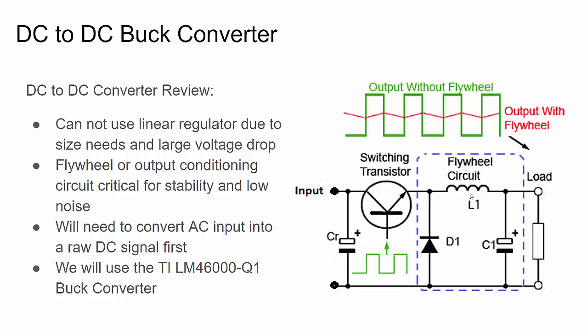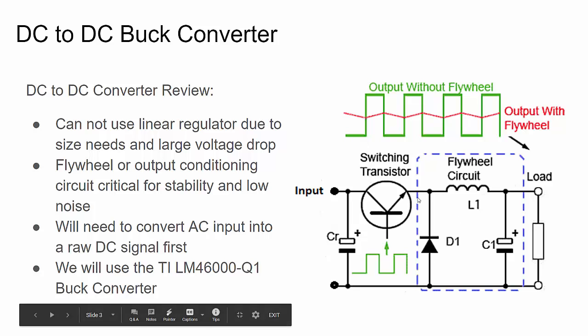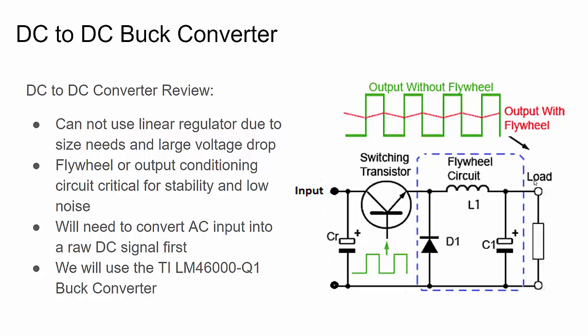This flywheel circuit is critical — it takes the PWM signal and smooths it into a DC signal. The switching transistor acts like a switch: when it's on, the inductor builds up a magnetic field; when the switch is open, the diode allows current to flow so the inductor's field can discharge, and the energy reservoir capacitor smooths the output. Linear regulators are easy to design with, cheap, and have clean outputs, but they can't handle a large voltage drop — they generate a lot of heat.